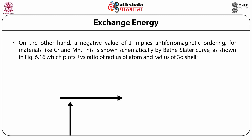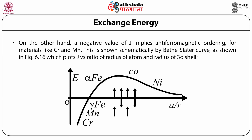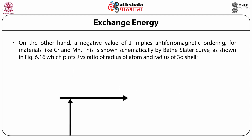The figure shows the Bethe-Slater curve, which plots J versus the ratio of the atomic radius to the radius of the 3d shell.